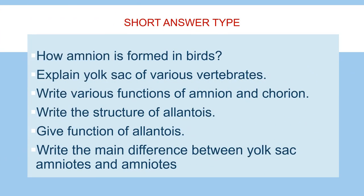The second category of questions are short answer type questions, and you have to answer these questions in a single paragraph. The first question of this category is: how is amnion formed in birds? Next: explain yolk sac of various vertebrates. Next: write various functions of amnion and chorion. Next: write the structure of allantois. Next: give functions of allantois. And the last question of this category is: write the main difference between yolk sac amniotes and amniotes.